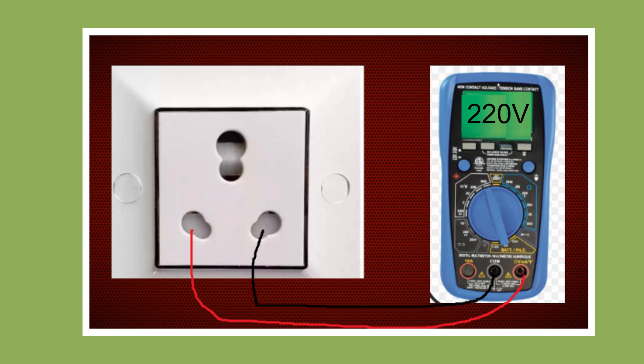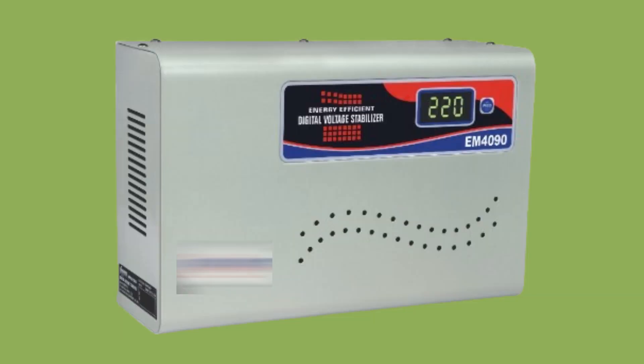If there is a voltage problem in your area, you can install a stabilizer for the AC. This should be installed and the error will be fixed. However, if the voltage of your house is fine and still this error is coming, then there could be another reason for it.